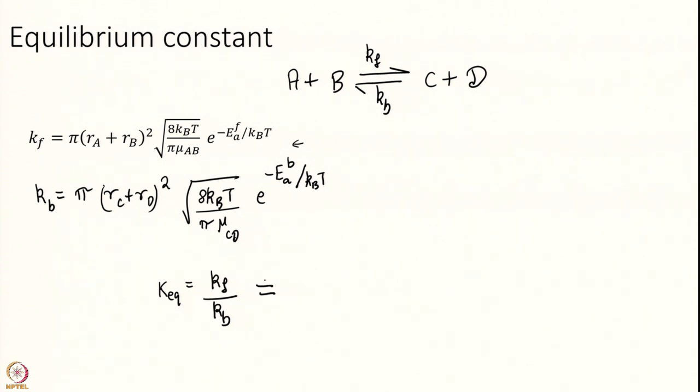So this I just divide these two. When I do that, you see the pi cancels. I have RA plus RB. I take in the square root, I have a lot of common terms. 8KT over pi cancels and I get e to the power of minus what I will call as delta E naught over KT. Where your delta E naught is simply EAF minus EAB. That is eventually the potential energy difference between reactant and products delta E naught.